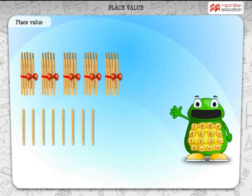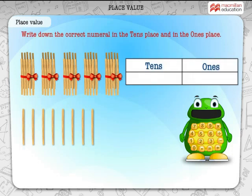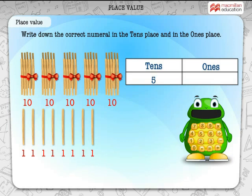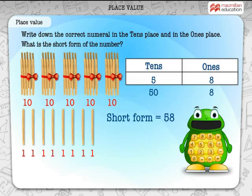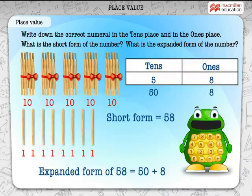Look at the bundles of sticks below. Write down the correct numeral in the tens place and in the ones place. What is the short form of the number? 58. What is the expanded form of the number? 58 is equal to 50 plus 8.